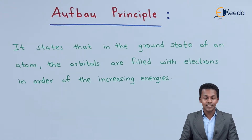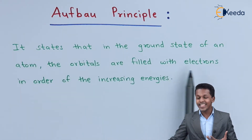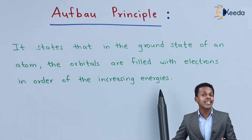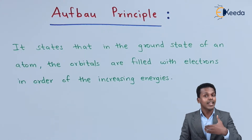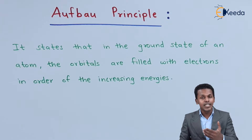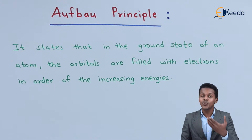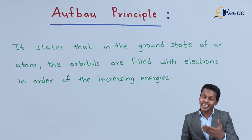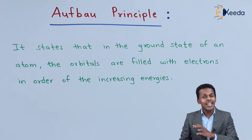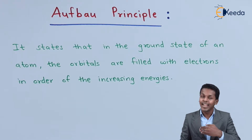The Aufbau principle states that in the ground state of an atom, the orbitals are filled with electrons in order of increasing energies. That means the electrons will be filled in the first orbital, then the second, third, and so on. The first shell consists of only one subshell with only one orbital. The second shell consists of two subshells — 2s and 2p — where 2s, 2px, 2py, and 2pz are the orbitals. So the electrons are filled starting from 1s, then 2s, then 2p, and so on.